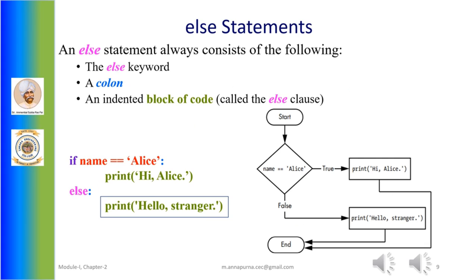An if clause can optionally be followed by an else statement. The else clause is executed only when the if statement's condition is false. An else statement does not have a condition. An else statement always consists of the else keyword, a colon, and an indented block of code called the else clause, starting on the next line. In the following example, if the user is not Alice, then the else statement's clause — 'print hello stranger' — is executed.